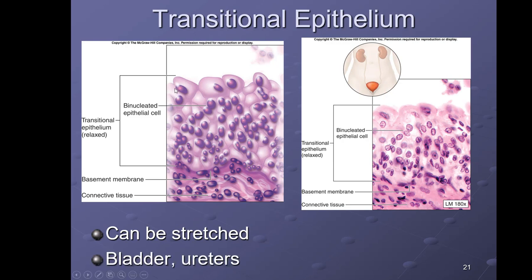Transitional epithelium changes shape. For identification purposes it is usually shown in the non-stretched state, where the cells on the surface look rounded or dome-shaped. Places we have transitional epithelium include the urinary bladder and the ureters — both part of the urinary system. The urinary bladder can stretch out, causing the cell shape to change.